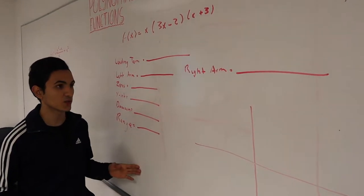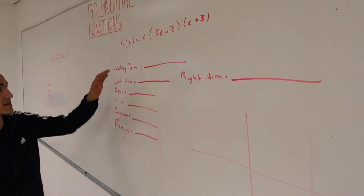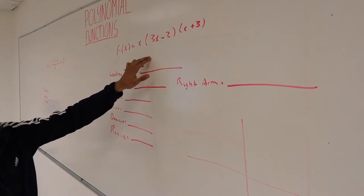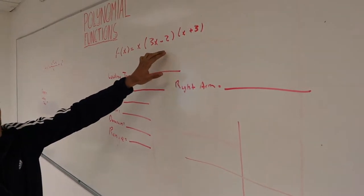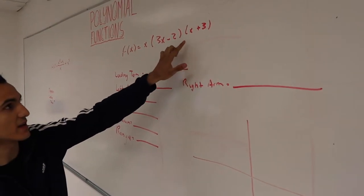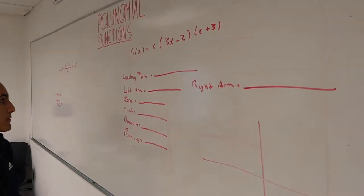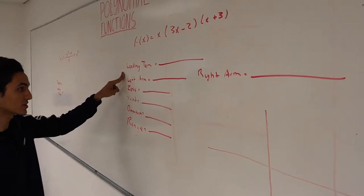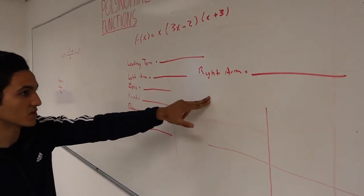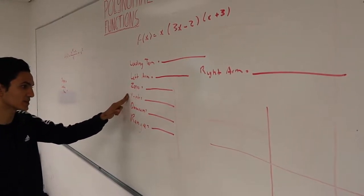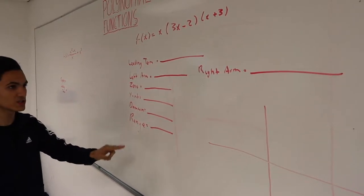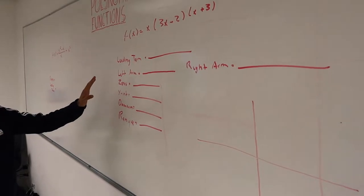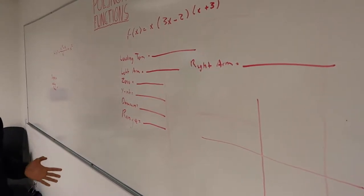We will start with an example: x times (3x minus 2) times (x plus 3). We need to find the leading term, left arm, right arm, zeros, y-intercept, domain, range, and graph this polynomial function. Note that zeros are the same as x-intercepts.